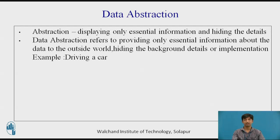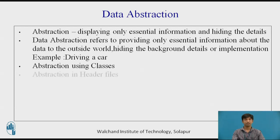Abstraction can be implemented using classes. A class helps us to group data members and member functions using available access specifiers, and a class can decide which data member will be visible to the outside world. Another type of abstraction in C++ can be seen in header files. For example, consider the power method present in the math.h header file. Whenever we need to calculate the power of a number, we simply call the power function from math.h and pass the numbers as arguments, without knowing the underlying algorithm by which the function actually calculates the power.